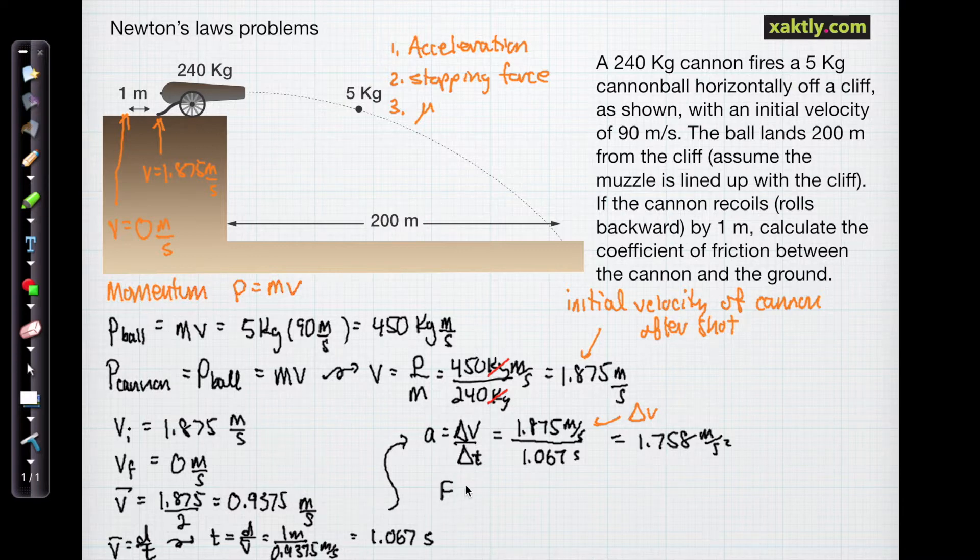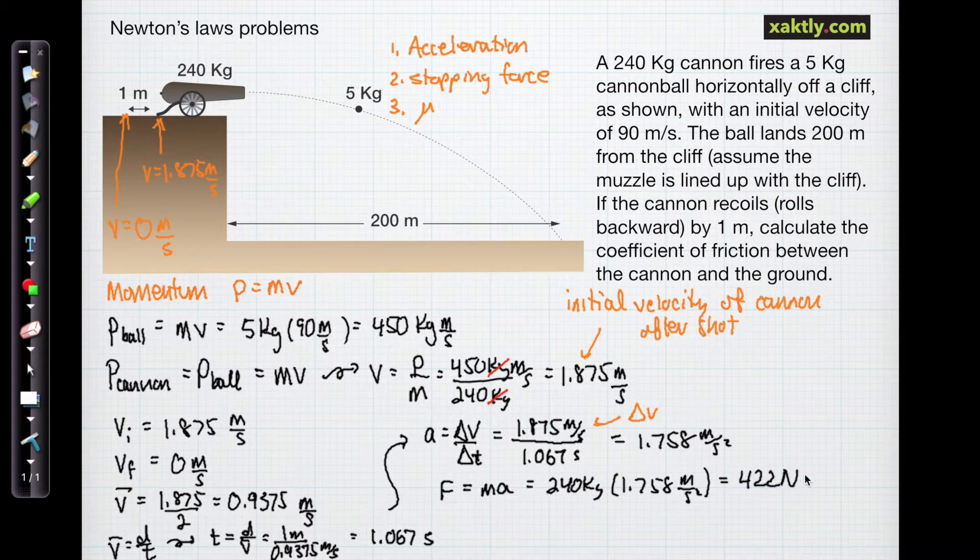Now force is equal to mass times acceleration, Newton's second law. And that's going to be the mass of the cannon, 240 kilograms, times its acceleration. It's really a deceleration. And so we do that multiplication, and we get the stopping force - this is the force that it takes to stop the cannon - of 422 newtons. And that stopping force comes from friction. That comes entirely from friction.